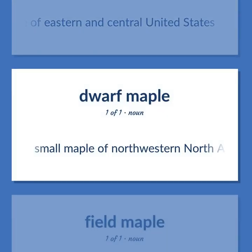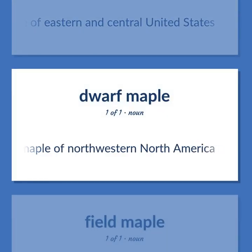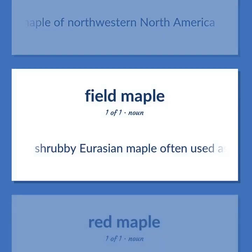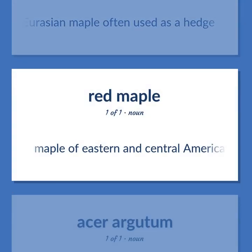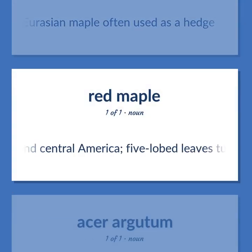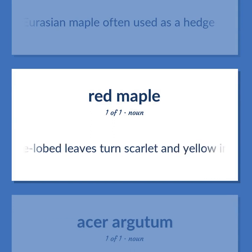Small maple of northwestern North America. Shrubby Eurasian maple often used as a hedge. Maple of eastern and central America, five-lobed leaves turn scarlet and yellow in autumn.